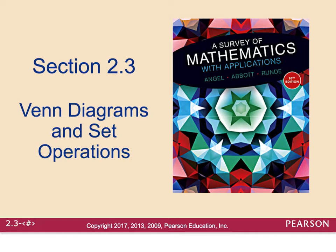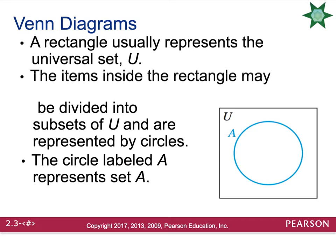Welcome to section 2.3. This is going to be an introduction to Venn diagrams and some set operations that you can do with Venn diagrams. A Venn diagram is named after a mathematician named John Venn, and he used these diagrams to organize information and sets. Typically, your Venn diagram is going to start off with a large rectangle, and that's going to be labeled with a U because that represents the universal set. Inside the rectangle, you are going to see circles, and the circles represent each subset that is discussed in the universal set.